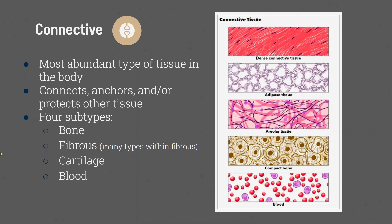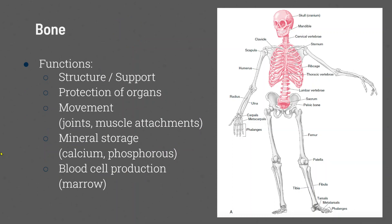So, bone. The function of bone is to support your structure and protect organs — such as the skull protects the brain, and the vertebrae protect the spinal cord. It is also a site for muscle attachments, helping with movement by creating levers. It is a storage site for minerals, specifically calcium, phosphorus, and other minerals. And it produces blood cells in the marrow.